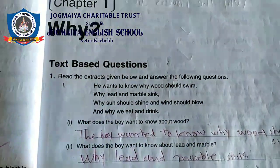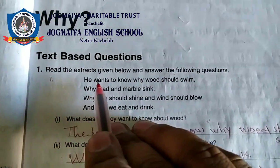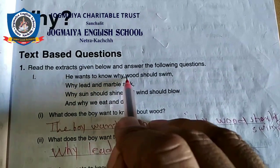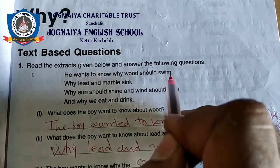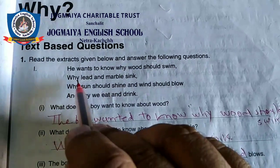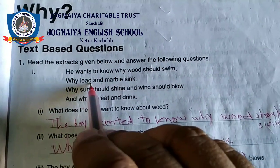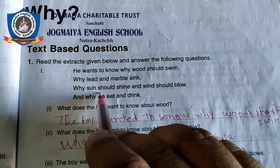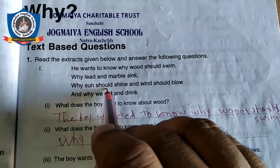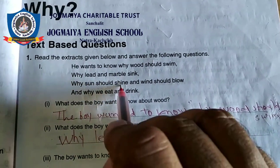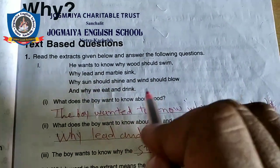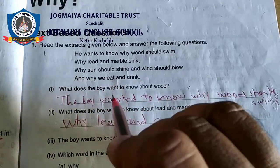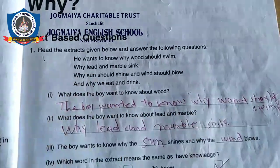So here is stanza one. He wants to know why wood should swim, why lead and marble sink, why sun should shine and wind should blow, and why we eat and drink.